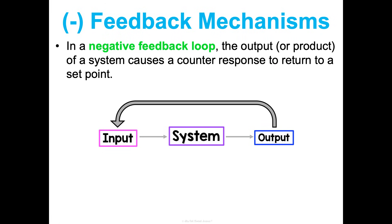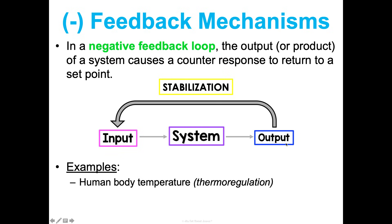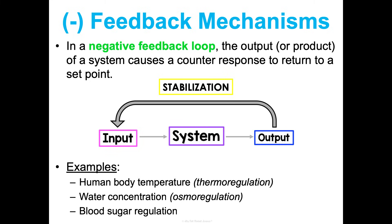In a negative feedback mechanism or loop, the output or product of the system does a counter response — we're trying to return back to a set point and stabilize. An example is human body temperature, or thermoregulation. If you walk outside in extreme heat, your body temperature would rise and your body would respond by sweating, which helps cool down and lower the temperature. The output stabilizes the input. Other examples include osmoregulation and blood sugar regulation — all negative feedback loops.